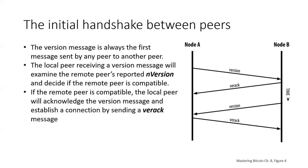How does a new node find peers? The first method is to query DNS using a number of DNS seeds, which are DNS servers that provide a list of IP addresses of Bitcoin nodes. Some of those DNS seeds provide a static list of IP addresses of stable Bitcoin listening nodes.